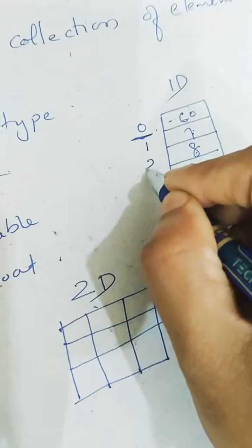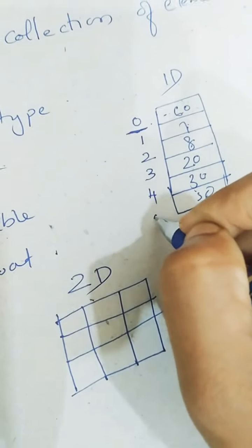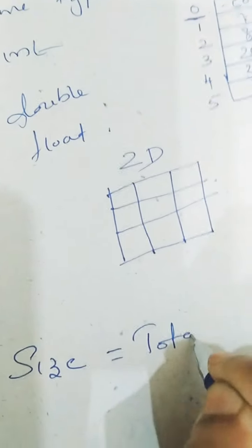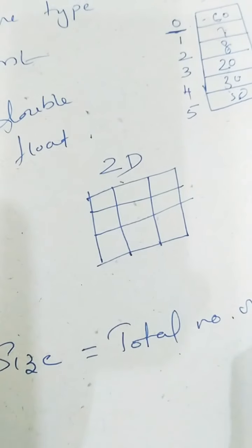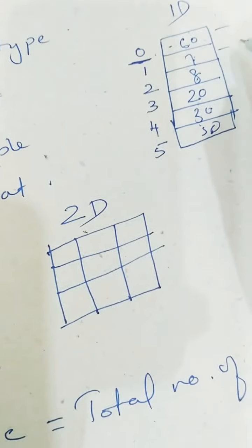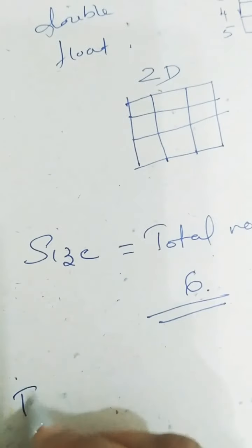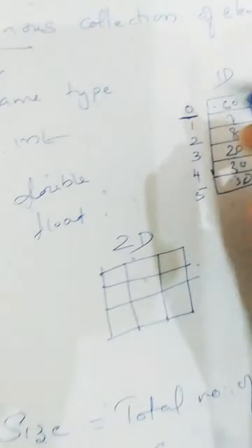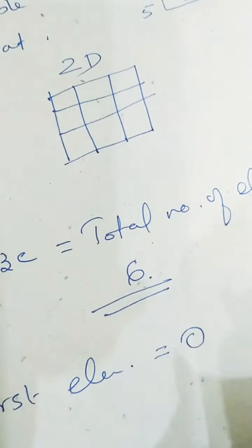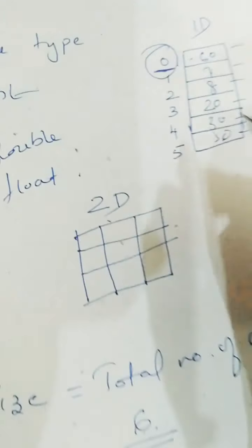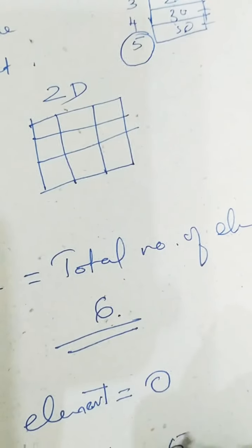The total number of elements in the array is the size. Size of array equals total number of elements. So what is the size of this array? 1, 2, 3, 4, 5, 6 — 6 is the size of the array. But the first element is at position 0, because array starts with index 0. And the last element is at position 5.